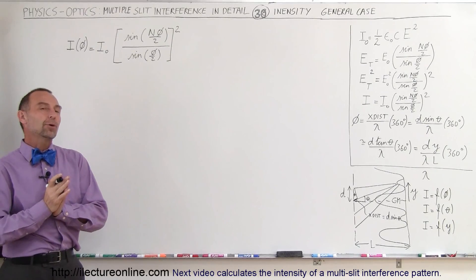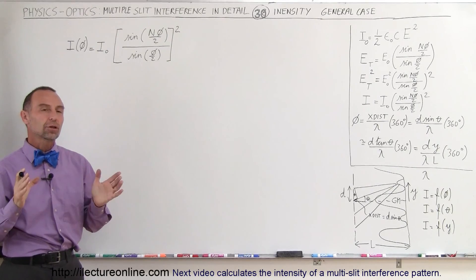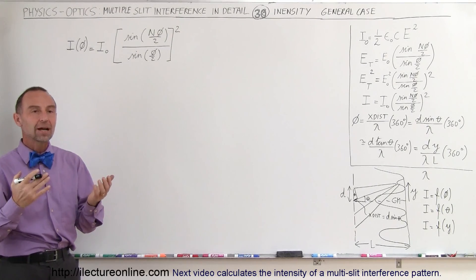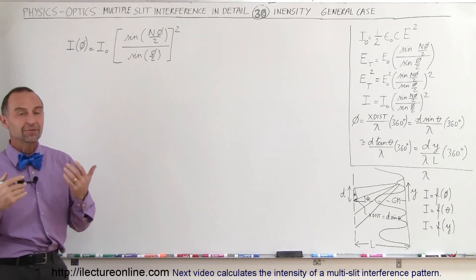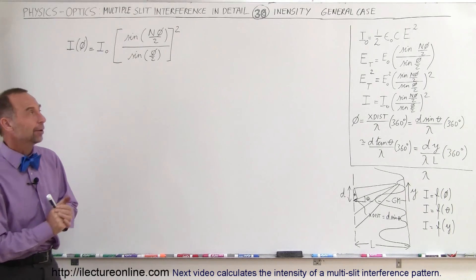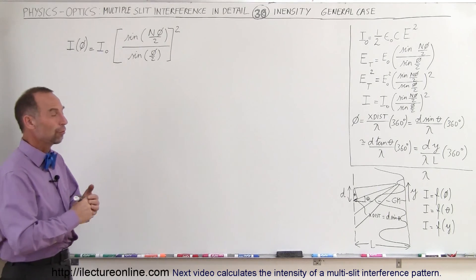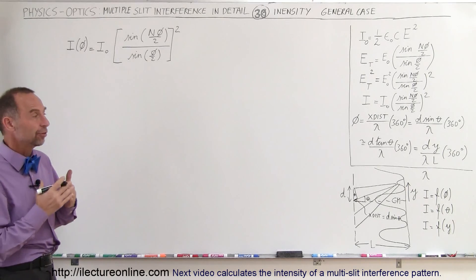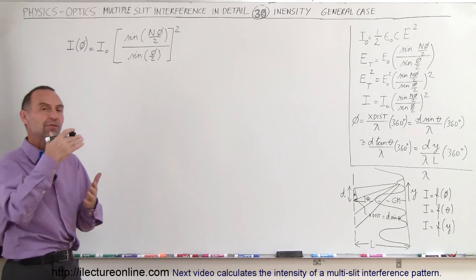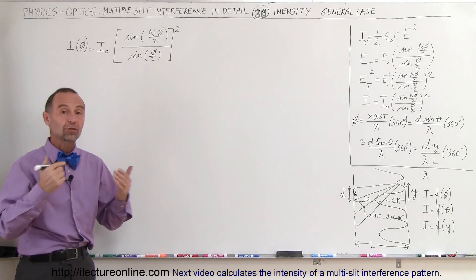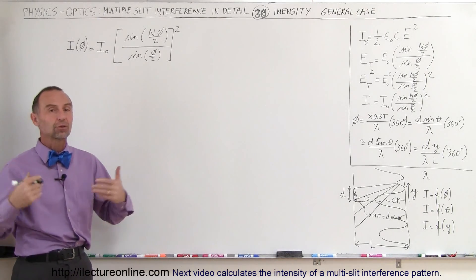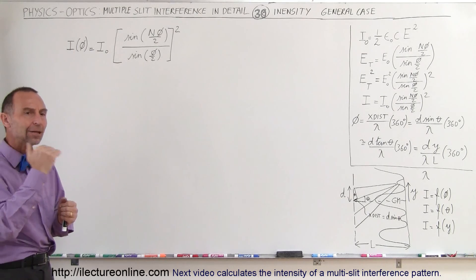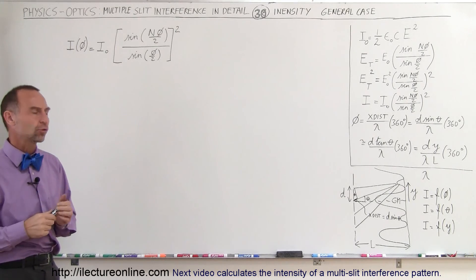Welcome to Electronline. Now we're going to take a closer look at how to calculate the intensity of a multi-slit interference pattern. For any number of slits, we're going to end up with some sort of interference pattern. On the previous several videos, you saw what some of those patterns will look like, but what will be the intensity at any location on the screen?